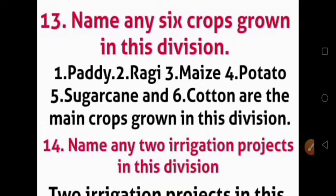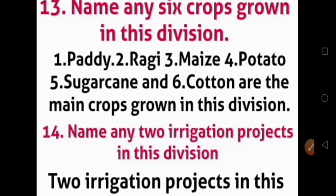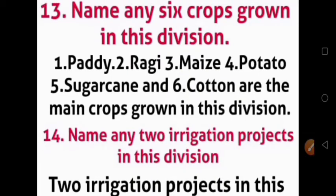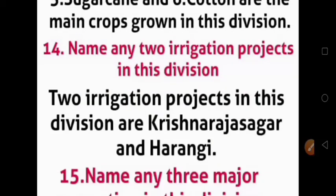Question number 13: Name any 6 crops grown in this division. Paddy, ragi, maize, potato, sugarcane and cotton are the main crops grown in this division. Name any 2 irrigation projects in this division.